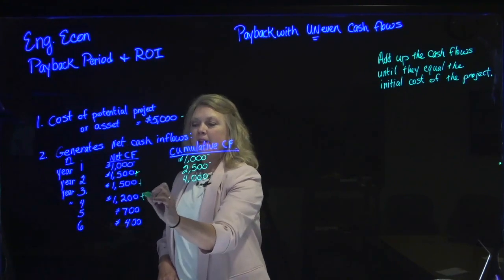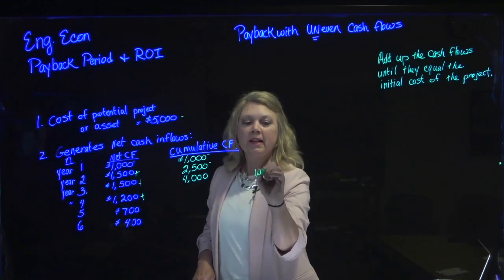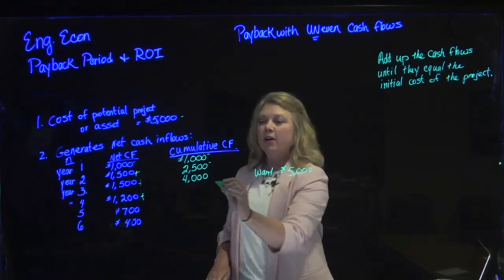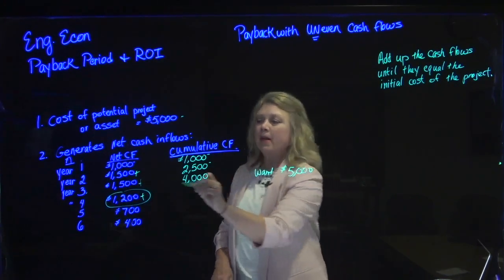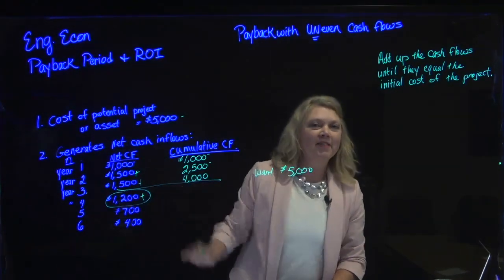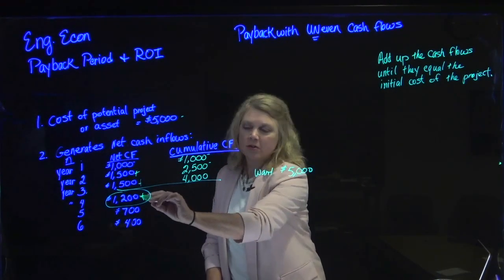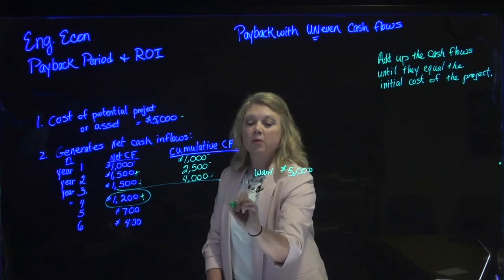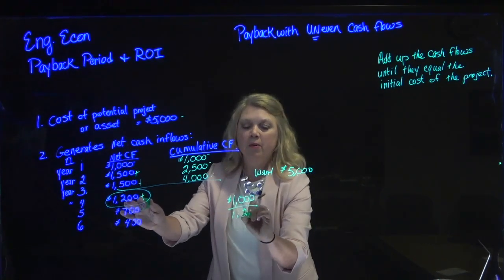We can see that in year four, we generate $1,200 of net cash in. We don't need quite that much — we want to get to $5,000 net cash in because that's the initial cost. So far we're at $4,000, so we just need a portion of year four. Our year four cash flows — by this point we've recouped $4,000, so we just need a portion of year four's cash flows. That portion is: how much of this year's cash flows do we need? We need $1,000. The initial cost is $5,000 and we're already at $4,000, so we need $1,000 out of year four's cash flow of $1,200.